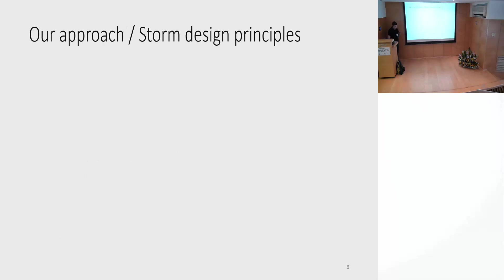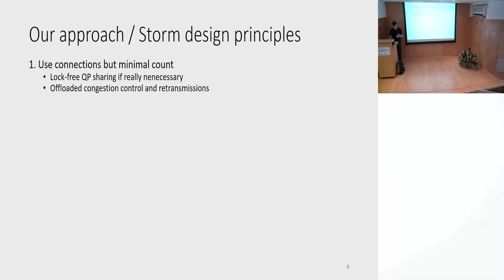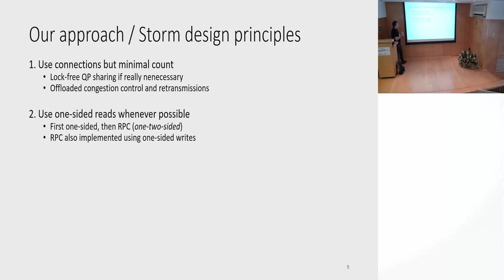So what's our approach? Here are a few design principles for STORM. First, we should go back to connections and try to minimize the number of connections we use. If we really have to share connections, we should use a lock-free mechanism. One big benefit of using connections is offloaded congestion control, which reduces overhead. Second, now that we have connections, we can take advantage of one-sided reads whenever possible. In STORM we propose one-sided primitives — we first do a remote read, and if we fail we resort to RPCs. RPCs in STORM are also implemented using one-sided writes in a scalable manner.